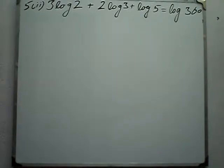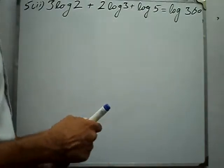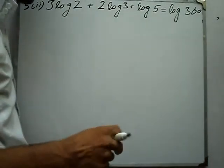Question number 5, part 2: 3 log 2 plus 2 log 3 plus log 5 is equal to log 360.